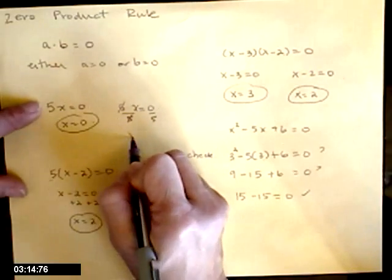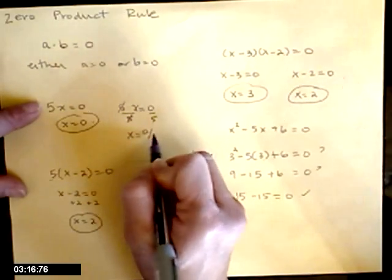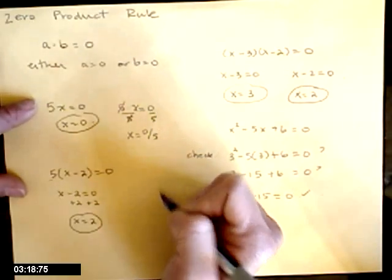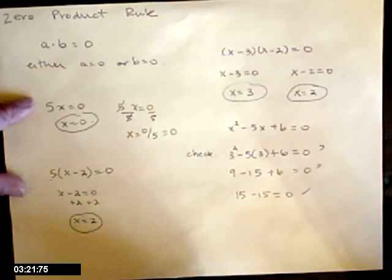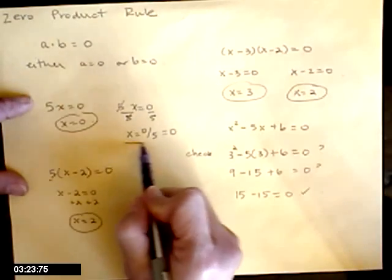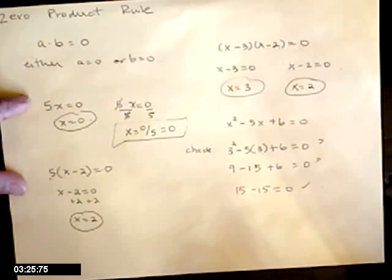Those 5's cancel, I get x equals zero over 5. And with fractions, if you have a zero in the numerator, that fraction is equal to zero. Zeros in the denominator are the undefined ones.